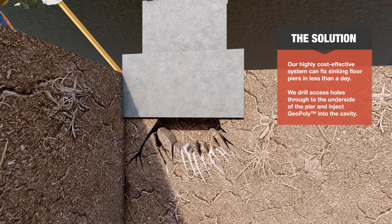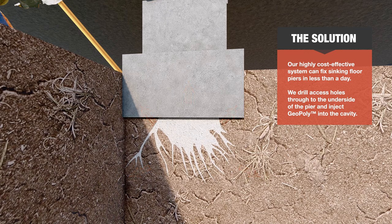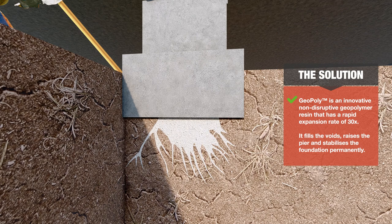Our highly cost effective system can fix sinking floor piers in less than a day. We drill access holes through to the underside of the pier and inject geopoly into the cavity. Geopoly is an innovative, non-disruptive geopolymer resin that has a rapid expansion rate of 30 times. It fills the voids, raises the pier and stabilises the foundation permanently.